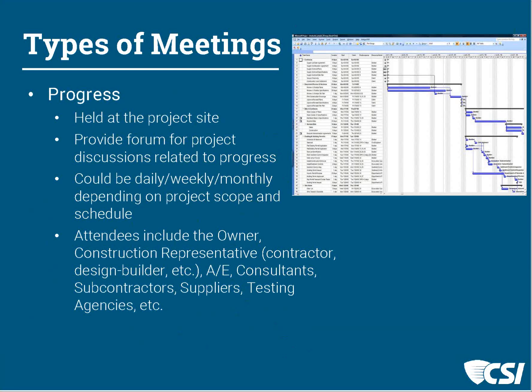As Kevin pointed out, these might be the contractor's meeting, or this might be a monthly meeting the architect or engineer is responsible for. Progress meetings are typically held at or near the site and provide a forum for discussion about what's going on related to the progress. Depending on the size and scope of the job, these might be a quick daily meeting, a weekly update, or a much more in-depth monthly meeting. The owner and construction representatives, architects, engineers, and consultants are all invited to add information to the project update.